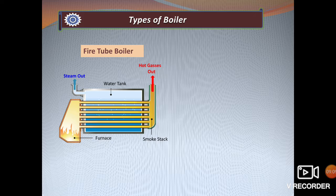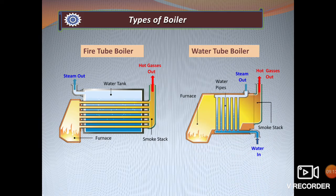The water tube boiler has a design fairly similar to a fire tube boiler, but instead of the furnace heating fire tubes, it heats water tubes inside the furnace. When the water is boiled, steam is generated and taken out for use. Water tube boilers are more thermally efficient than fire tube boilers, but they are more complex to construct, and water quality can be an important factor — the water may need filtering to operate more efficiently.